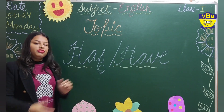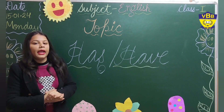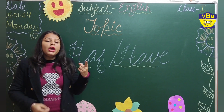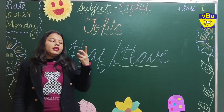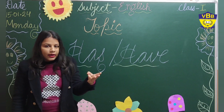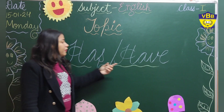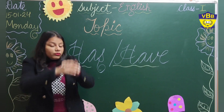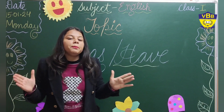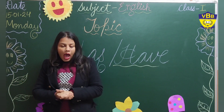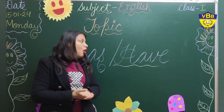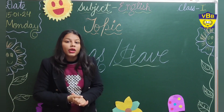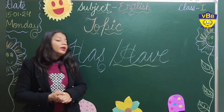So we use 'has' with he, she, it — when we are talking about only one single person, animal, or thing. And we use 'have' when we are talking about so many people, things, or animals. Or we can say we use 'have' with we, you, they.